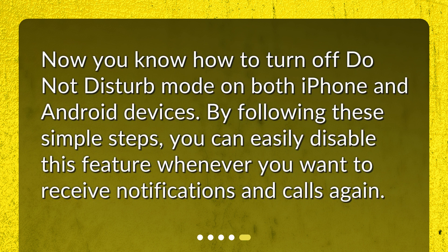Now you know how to turn off Do Not Disturb mode on both iPhone and Android devices. By following these simple steps, you can easily disable this feature whenever you want to receive notifications and calls again.